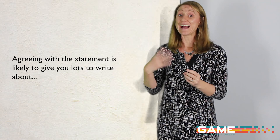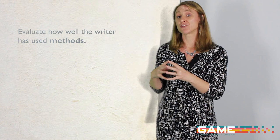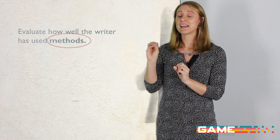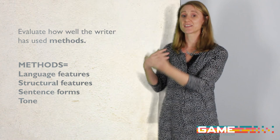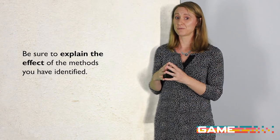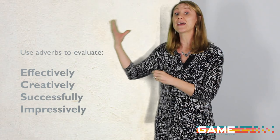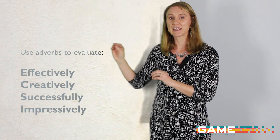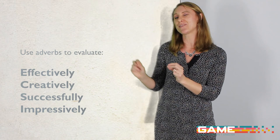So what are the assessment criteria? You need to think about evaluating how well the writer has used certain methods — and it's the methods that are sometimes forgotten. You can talk about any language features, structural features, sentence forms, or tone. You can also use quotations from questions two and three if they fall within the specified line numbers. Think about the effect on the reader too. A good tip for evaluating: use positive adverbs — 'The writer has effectively used repetition,' 'The writer has successfully used onomatopoeia.' Words like effectively, successfully, impressively, creatively all indicate that you are evaluating how well the writer has used that technique.